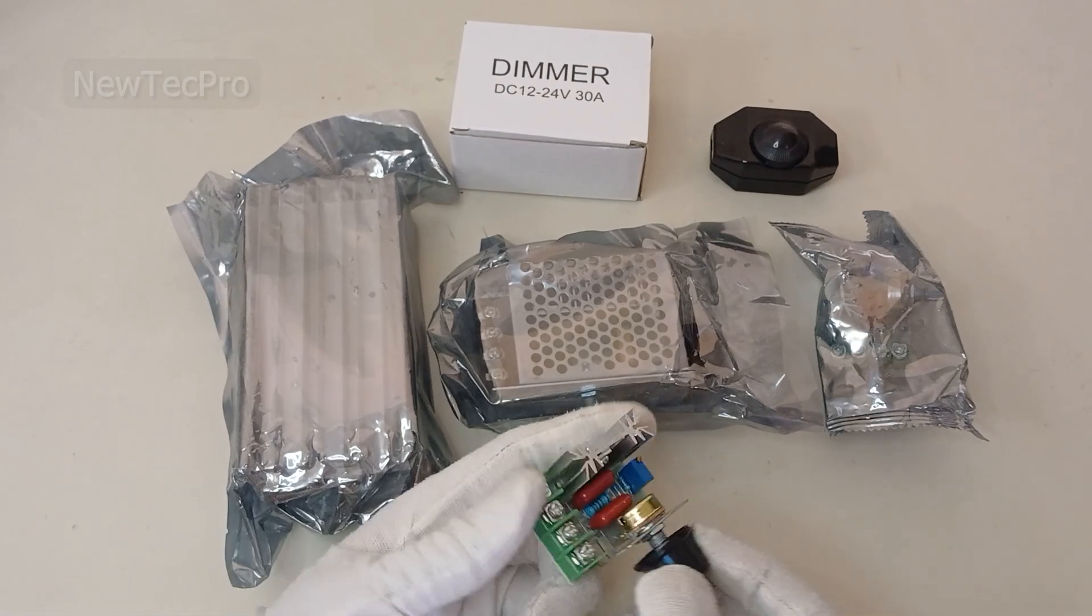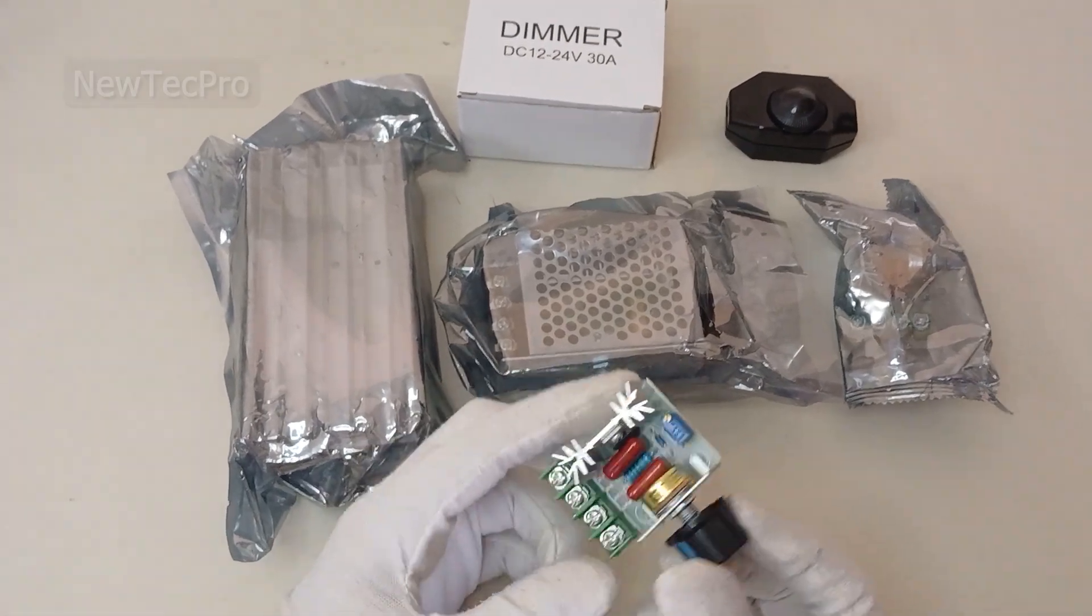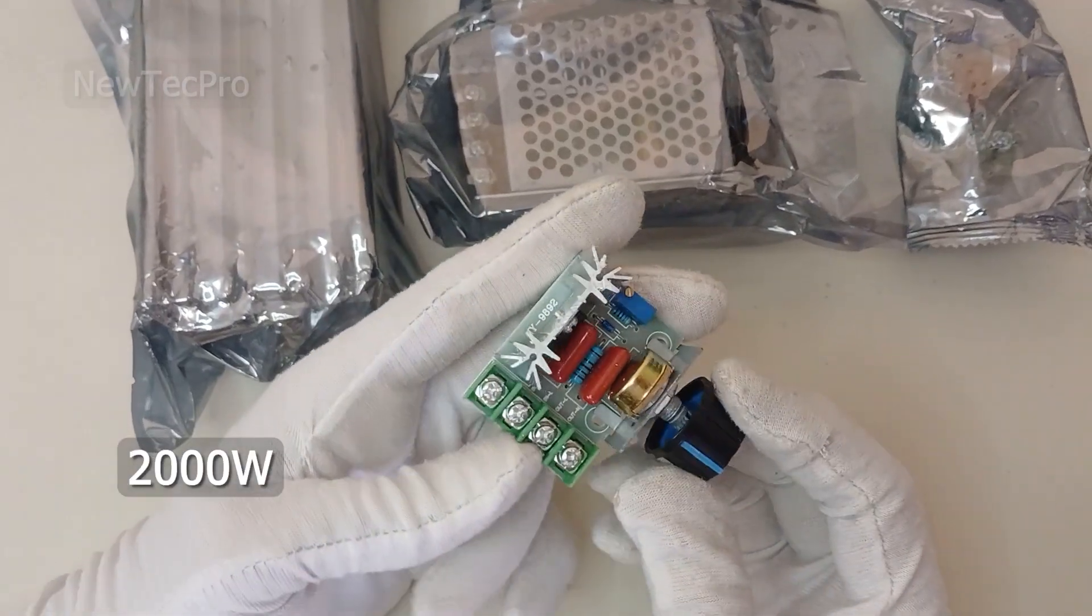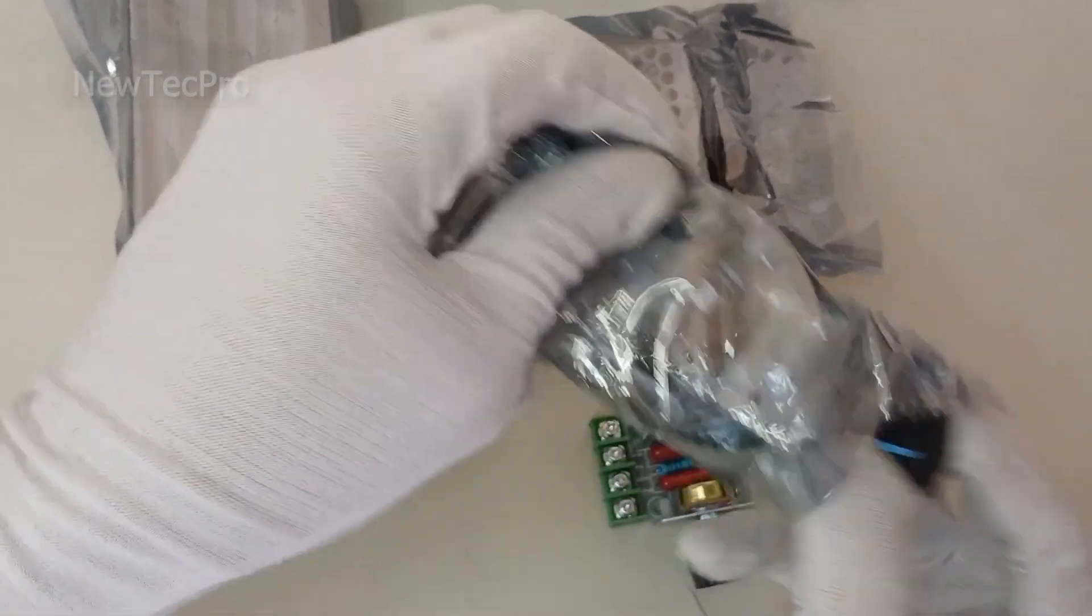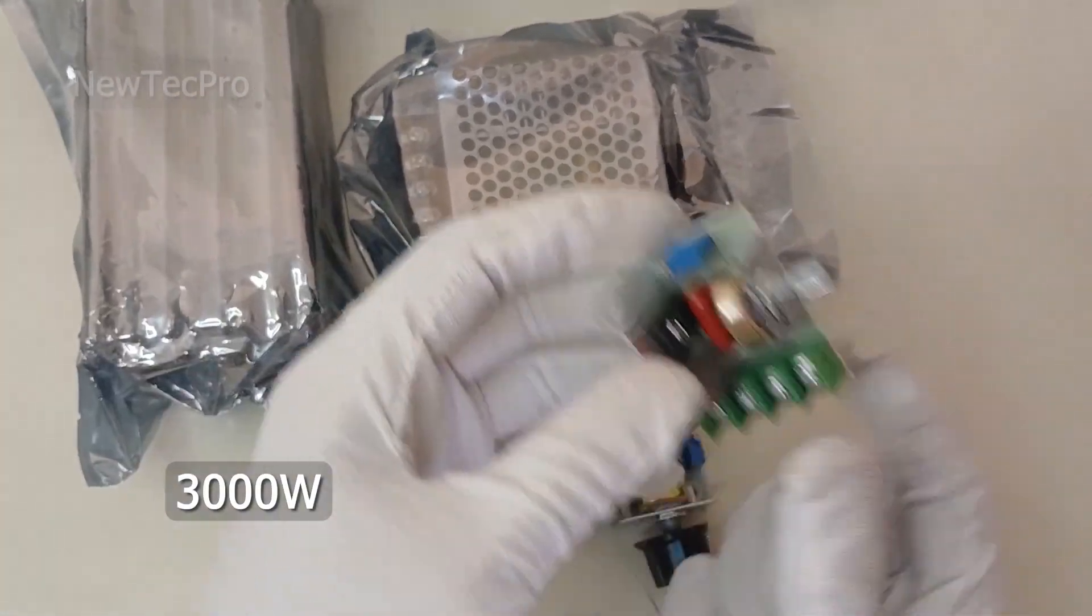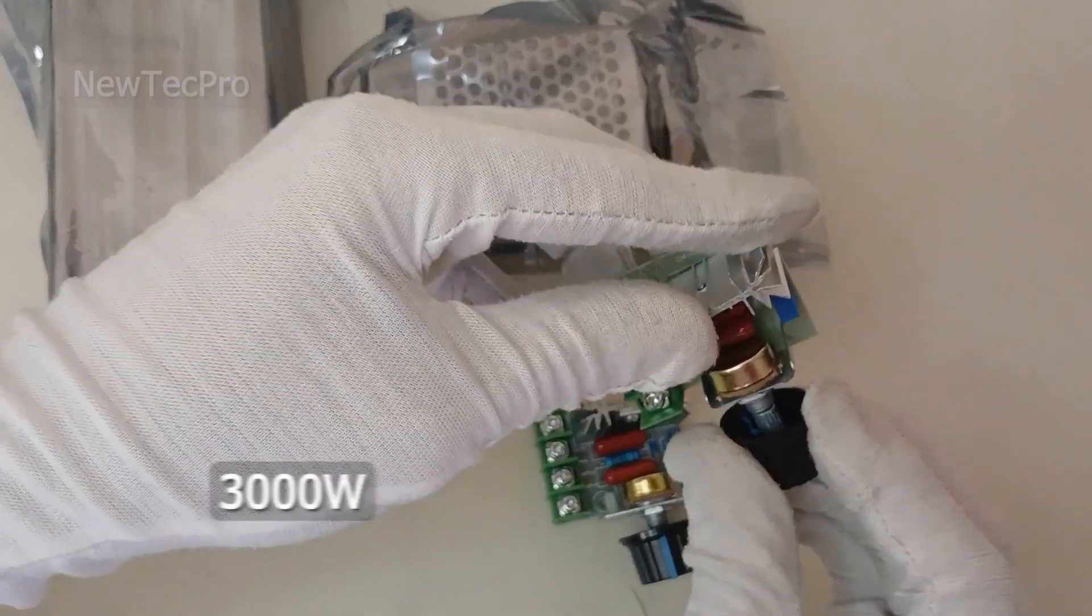Here are different dimmers. For example, this model is a 2000 watt AC dimmer, and this model is a 3000 watt AC dimmer.